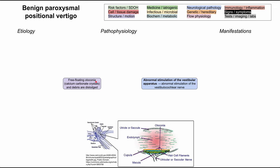This all begins with otoconia that are free-floating in the semicircular canals. Your inner ear on each side has three semicircular canals aligned with the different axes of the three spatial dimensions in which we move our heads. Within these semicircular canals, you have otoconia — tiny crystals made of calcium carbonate — that move around in the endolymph. As they move, they trigger hair cell filaments that fire and tell our brain which position our head is in, giving us a sense of acceleration and motion.